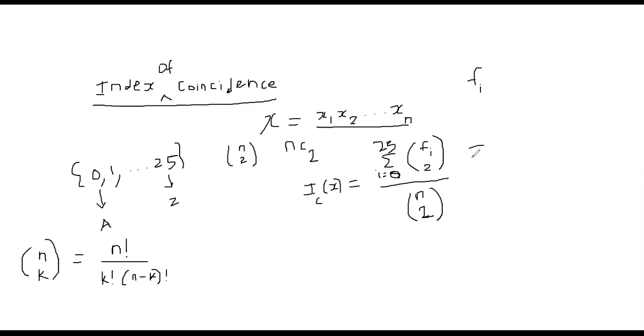sigma i equal to 0 to 25, f_i times f_i minus 1. You should be able to convince yourself that's true if you just apply this formula. By n times n minus 1.